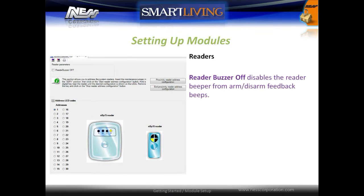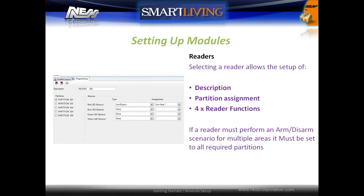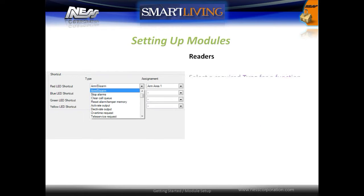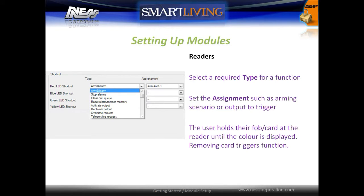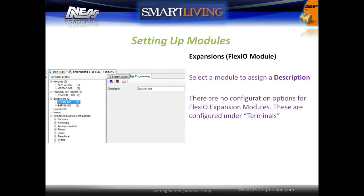Card readers use the internal buzzer to indicate entry-exit delay and alarm events. Setting the Reader Buzzer Off option will disable this feature. Selecting a reader allows programming of the description, partition assignment, and the four reader functions. If a reader must perform an armed/disarmed scenario for multiple areas, it must be mapped to all required partitions. To program a reader function for one of the LEDs, select the type — such as armed/disarmed or operate an output — and then select the assignment, such as the scenario or the output number. To operate multiple functions, the user holds their card or fob at the reader until the colored LED is displayed, then removes the card to trigger the function. FlexIO modules allow a description to be assigned for identification; there are no additional configuration options as terminals are programmed under the Terminals section.